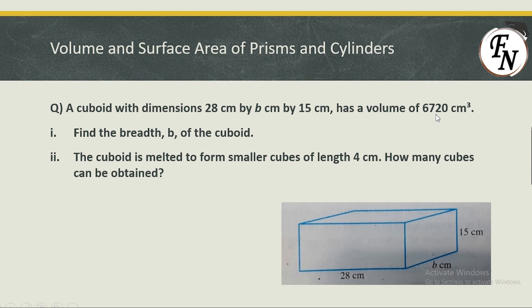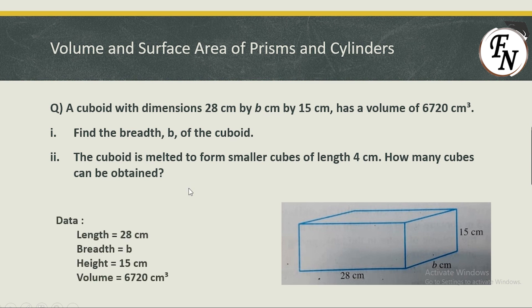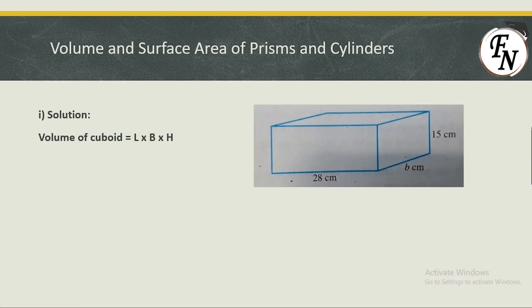Since the volume is provided, we can use the volume formula to calculate the missing dimension. First, note down the data: length = 28 cm, breadth = b, height = 15 cm, and volume = 6720 cm³.